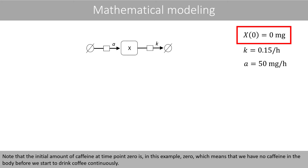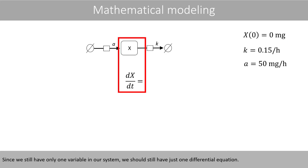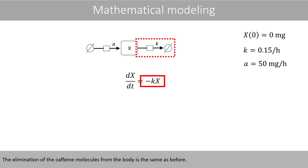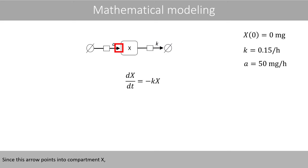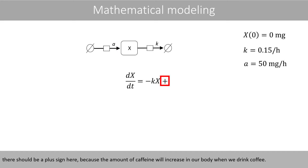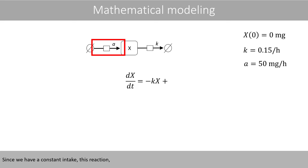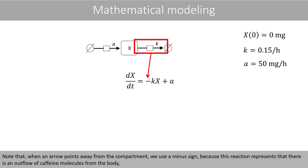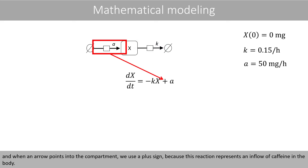Note that the initial amount of caffeine at time point zero is zero in this example, meaning we have no caffeine in the body before we start drinking coffee continuously. Since we still have only one variable, we still have just one differential equation. The elimination of caffeine molecules from the body is the same as before. Since the inflow arrow points into compartment x, there should be a plus sign, because the amount of caffeine will increase when we drink coffee. Since we have a constant intake, this reaction is simply a constant term. When an arrow points away from the compartment we use a minus sign, and when it points into the compartment we use a plus sign.